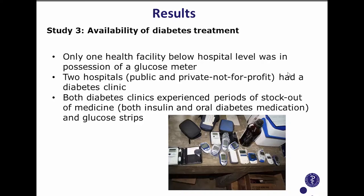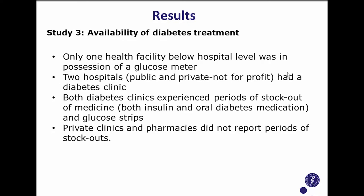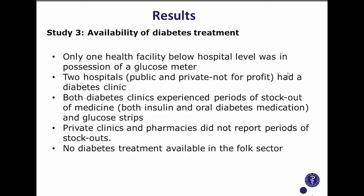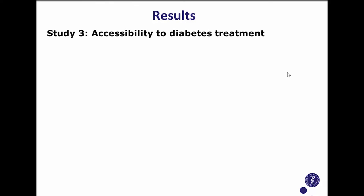In contrast, private clinics and private pharmacies were never reported to have stock-outs. None of the herbalists or herbal clinics we visited had available treatment for diabetes. So one thing is availability; another is accessibility.